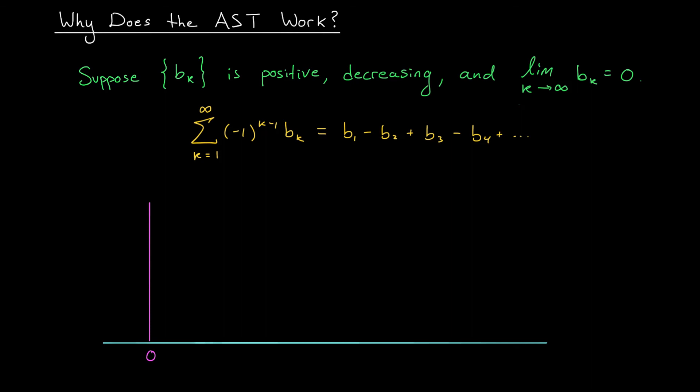So let's say that we start at zero, and we add our first term b1. That's going to move us somewhere to the right, maybe over here. Next, we subtract b2. But wait a second, b2 is smaller than b1. So I don't move all the way back to zero, I maybe stop about here. Next, I add b3, which moves me back toward the right. But since b3 is less than b2, I don't go all the way back to the right. Maybe I'll stop here. I continue this process.